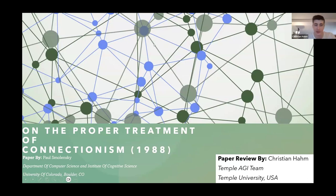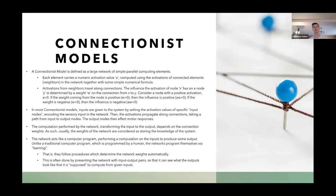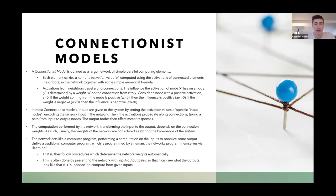On the Proper Treatment of Connectionism, 1988, by Paul Smolensky from the Department of Computer Science and Institute of Cognitive Science at University of Colorado, Boulder. We'll go over again: what is a connectionist model? It's a large network of simple parallel computing elements. Each element has an activation — a numeric activation value computed using the activation of its connected neighbors and a simple numerical formula.